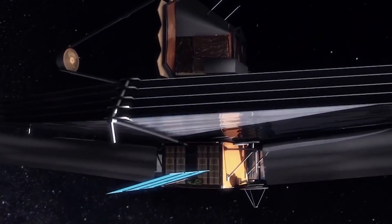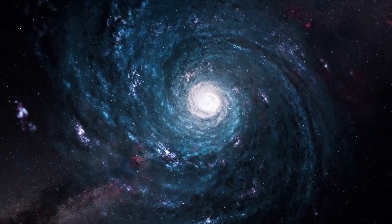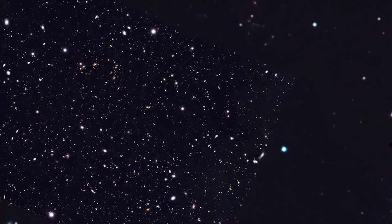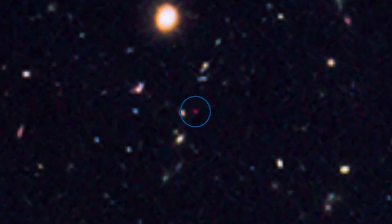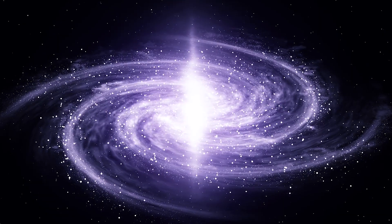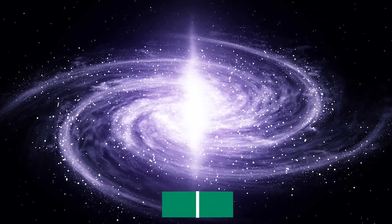James Webb has allowed us to see the end of space by discovering the oldest galaxy. The previously oldest known galaxy was discovered by Hubble in July and is known as GNZ 11, which dates back 400 million years after the birth of the universe.